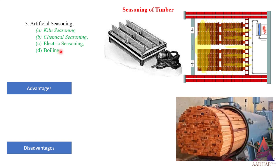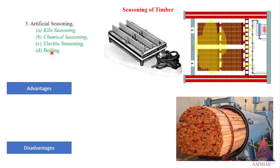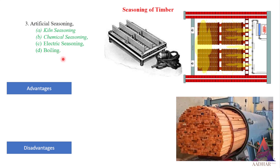Seasoning by boiling. Seasoning of timber is achieved by boiling it in water for three to four hours. After boiling, timber is allowed to dry. For large quantities of timber, boiling is difficult, so sometimes hot steam is passed through timber logs in an enclosed room, which also gives good results. The boiling or steaming process develops the strength and elasticity of timber, but economically it is of higher cost.